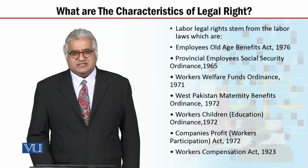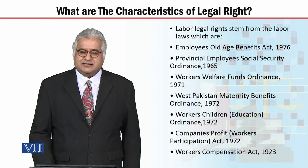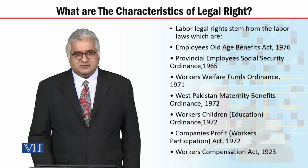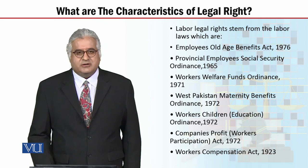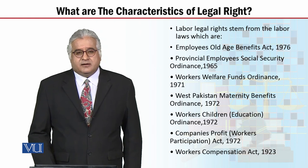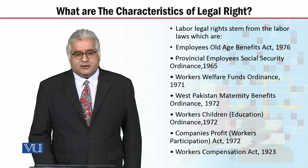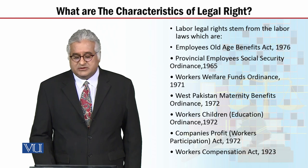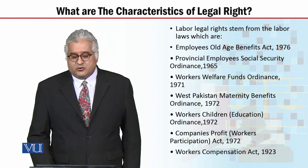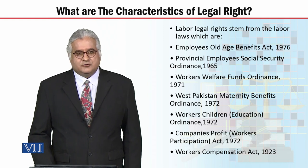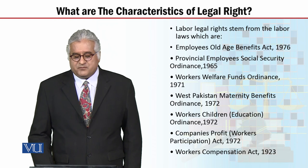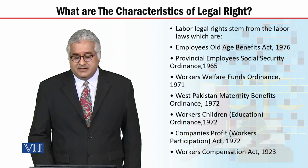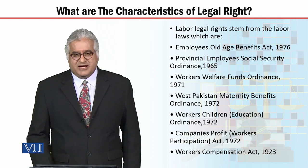Now the question arises: where do labor rights stem from? Where do they originate? We have certain labor laws in our country, in our provinces, which we discuss with you. Labor-related laws include the Employees Old Age Benefit Act 1976 — ismein bhi labors ya workers ke rights maujood hain. Doosra hai Provincial Employees Social Security Ordinance 1965 — naturally law hai toh rights and obligations create karta hai. Third: Workers Welfare Fund Ordinance 1971. Again, it is a law, not a policy. Therefore, isse rights jo hain woh stem hote hain.